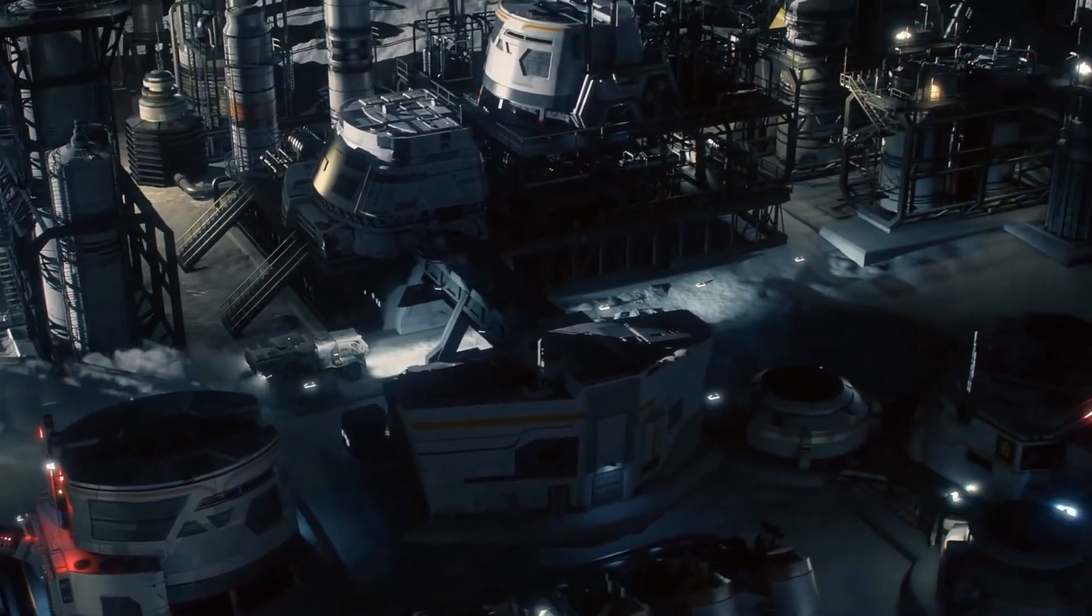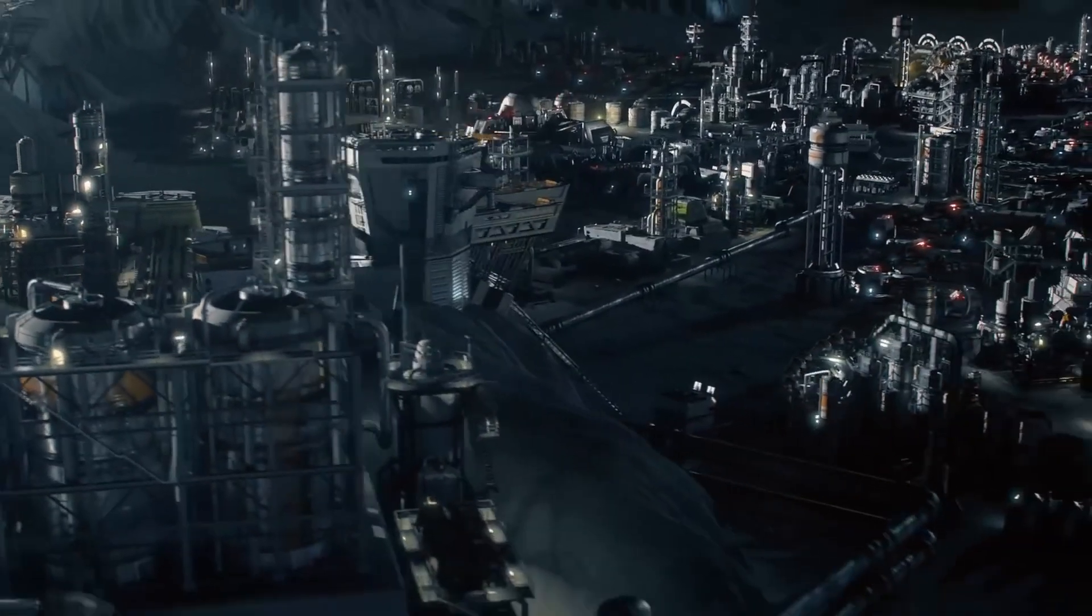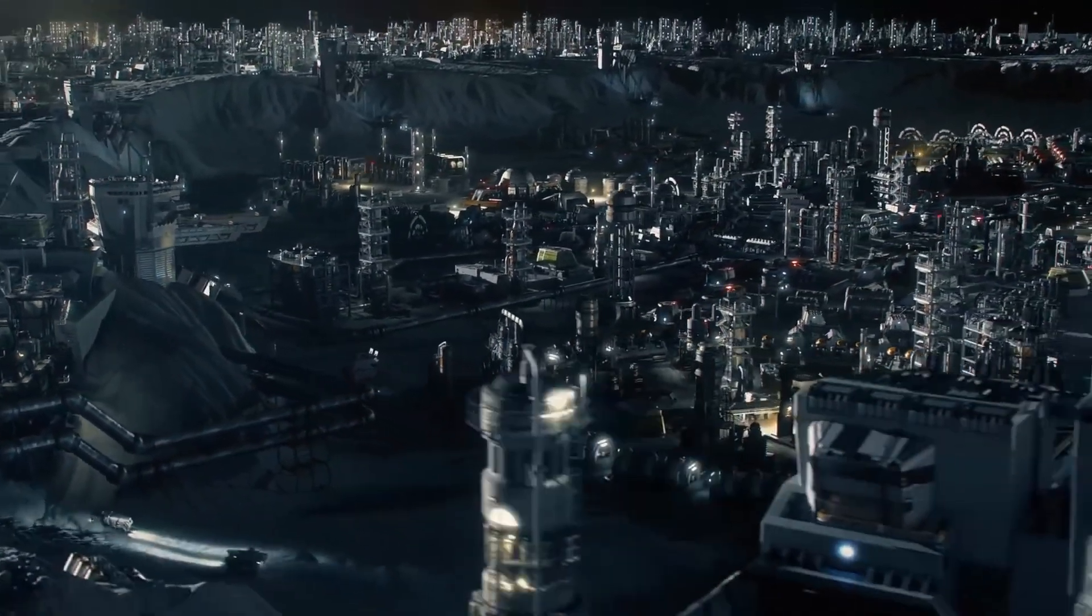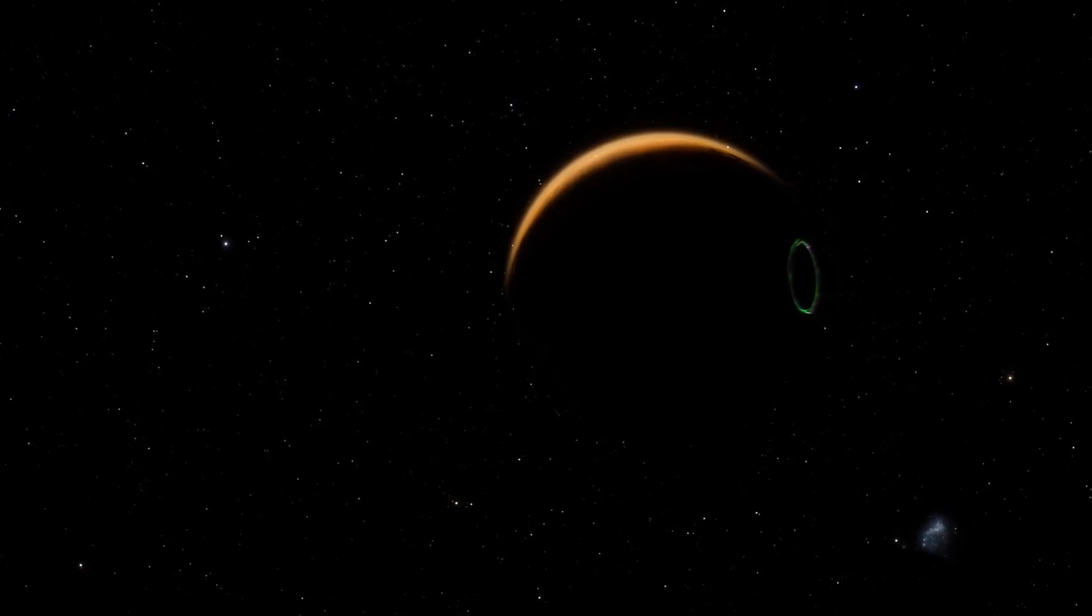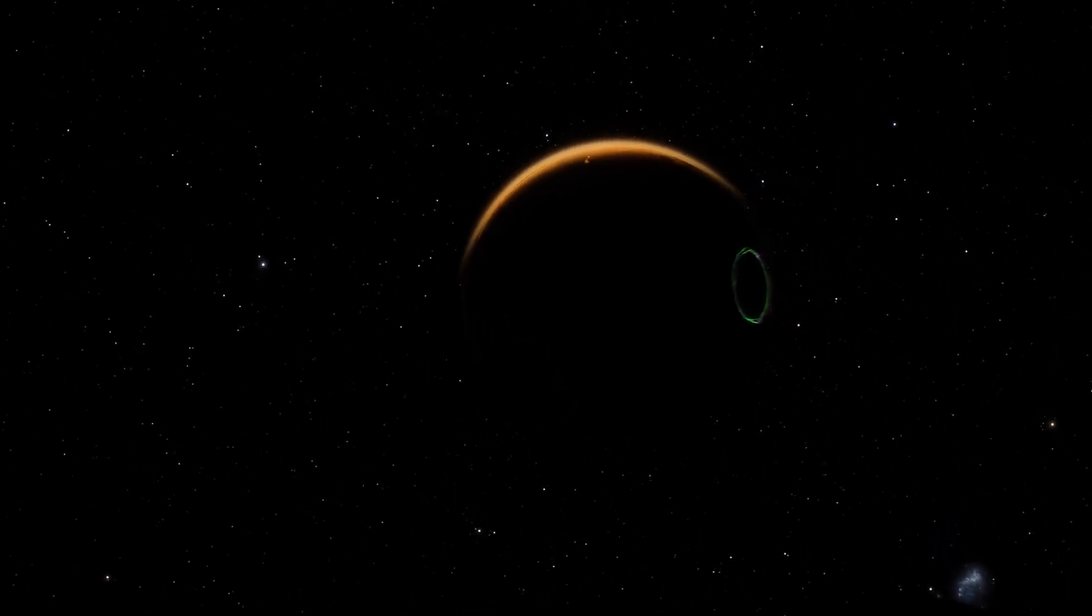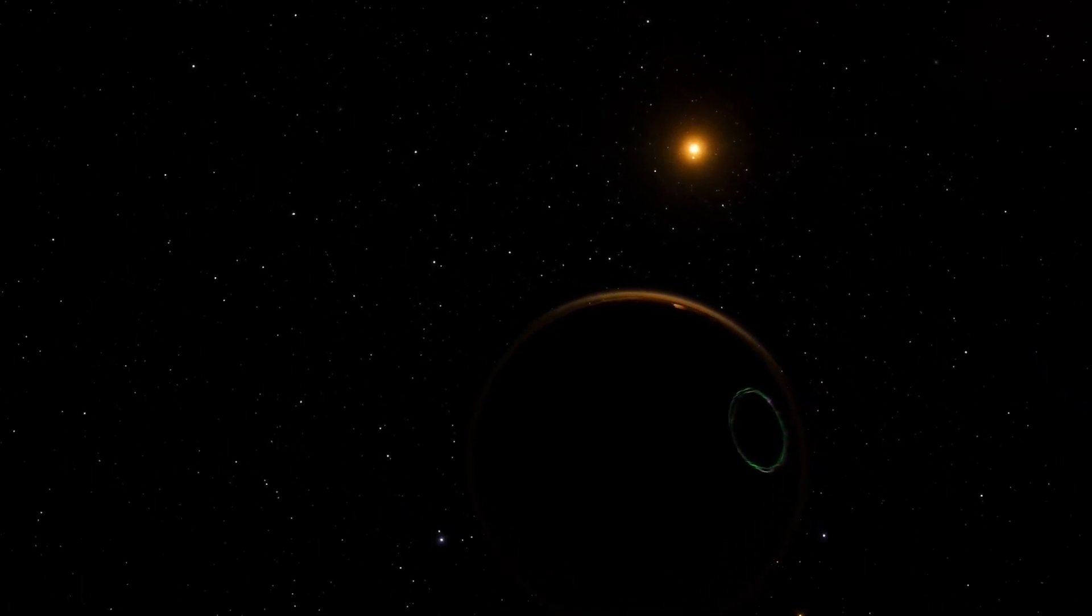By focusing on Proxima Centauri b, the closest exoplanet to Earth, the telescope revealed the presence of unusual bright lights emanating from its surface. What could be the cause of these unusual lights? Could they indicate the existence of life beyond our own planet?